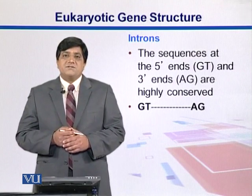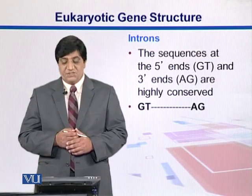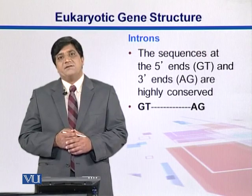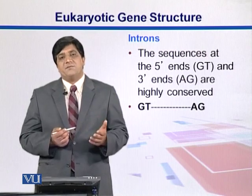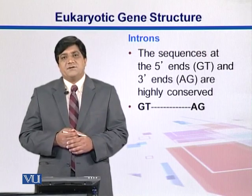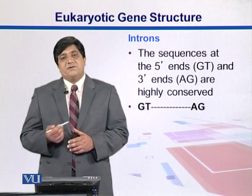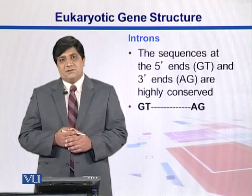Introns can be distinguished by the presence of GT at their 5' end, whereas AG at their 3' end.